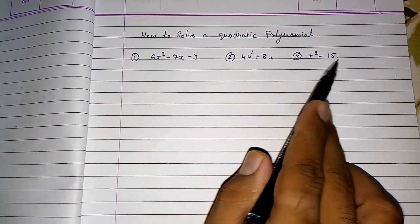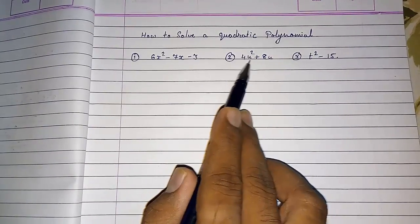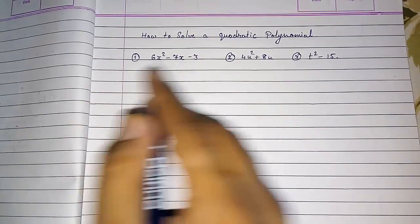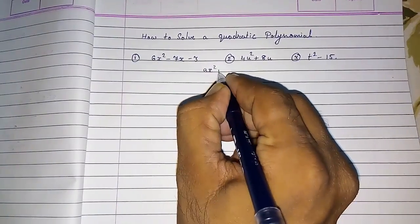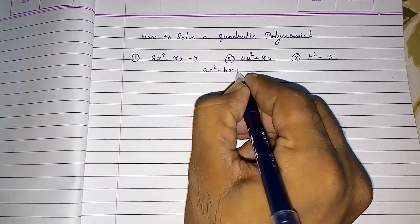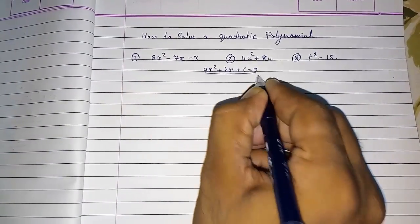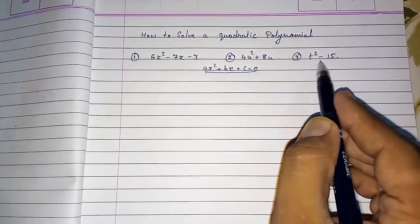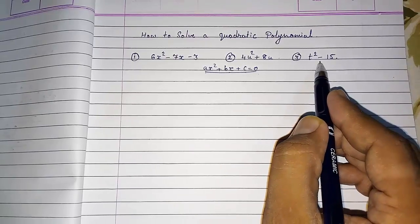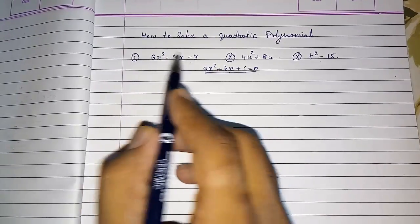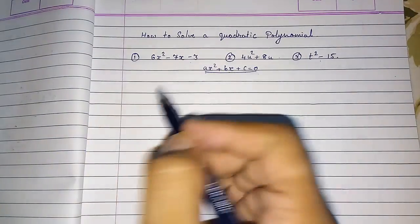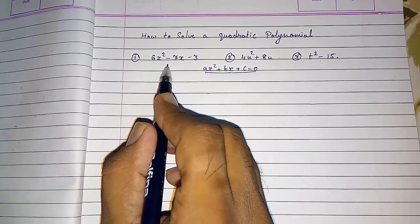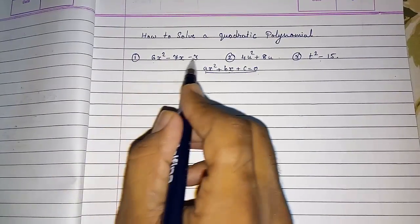Look here, I have taken three different examples. Sometimes the last number is not there, sometimes the middle number is not there. The standard form is ax² + bx + c = 0. In one example the last number is not given, in another the middle number is also missing. I am going to solve all three and verify the relationship between zeros and coefficients.